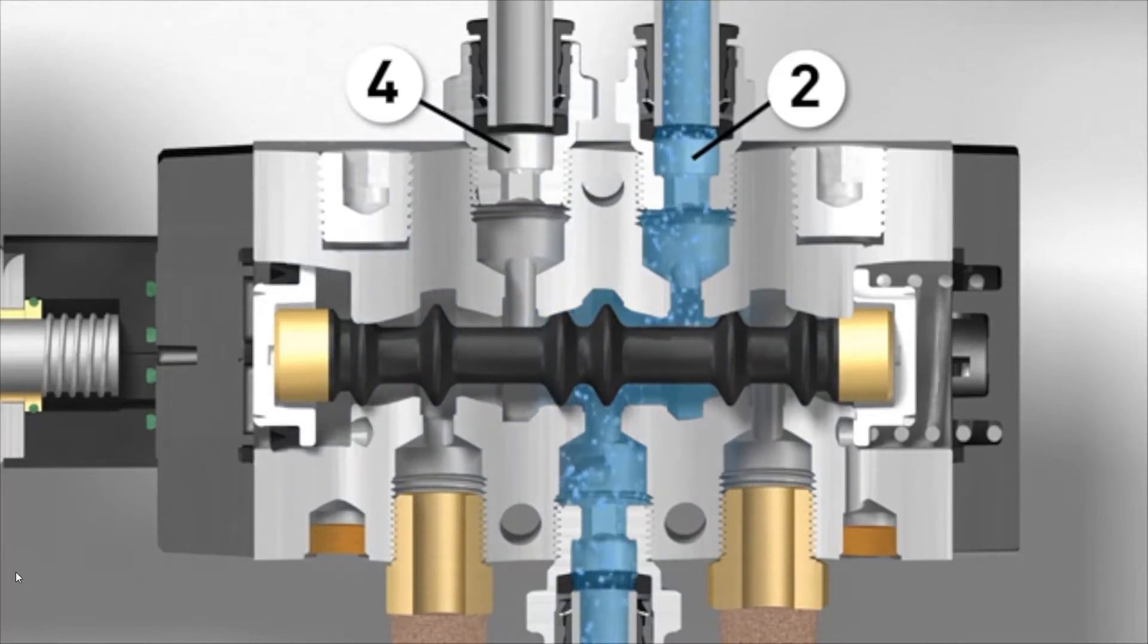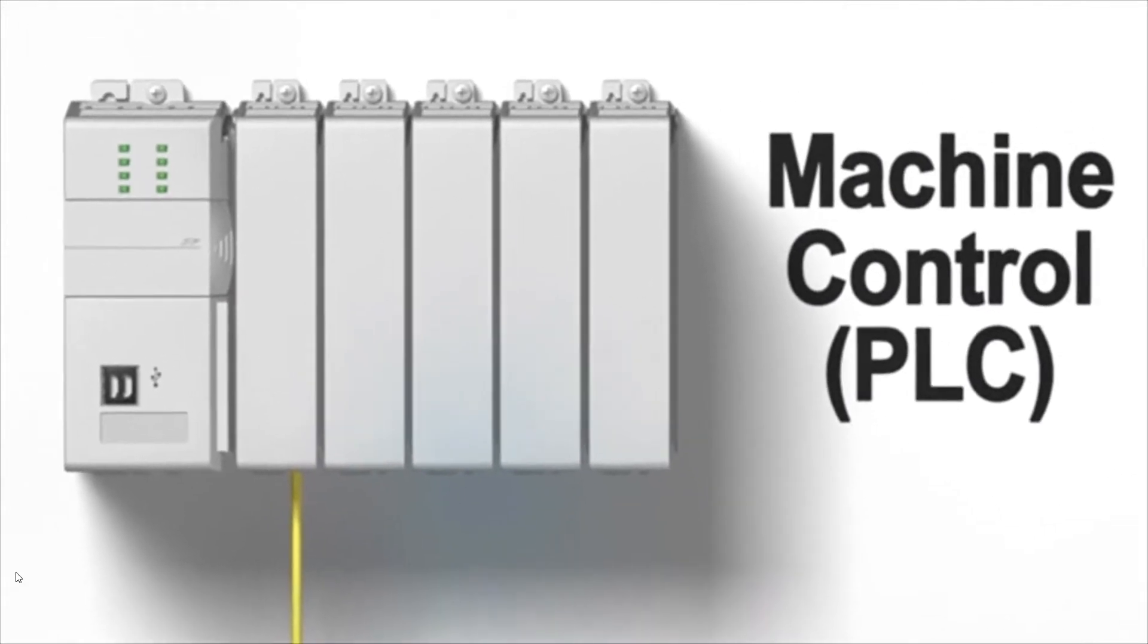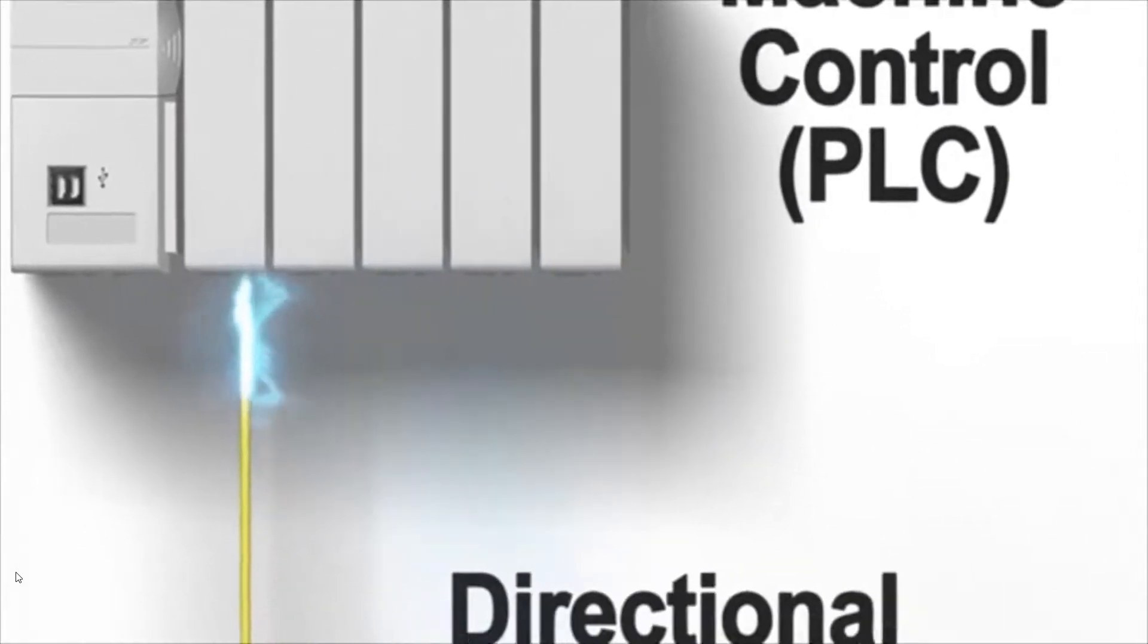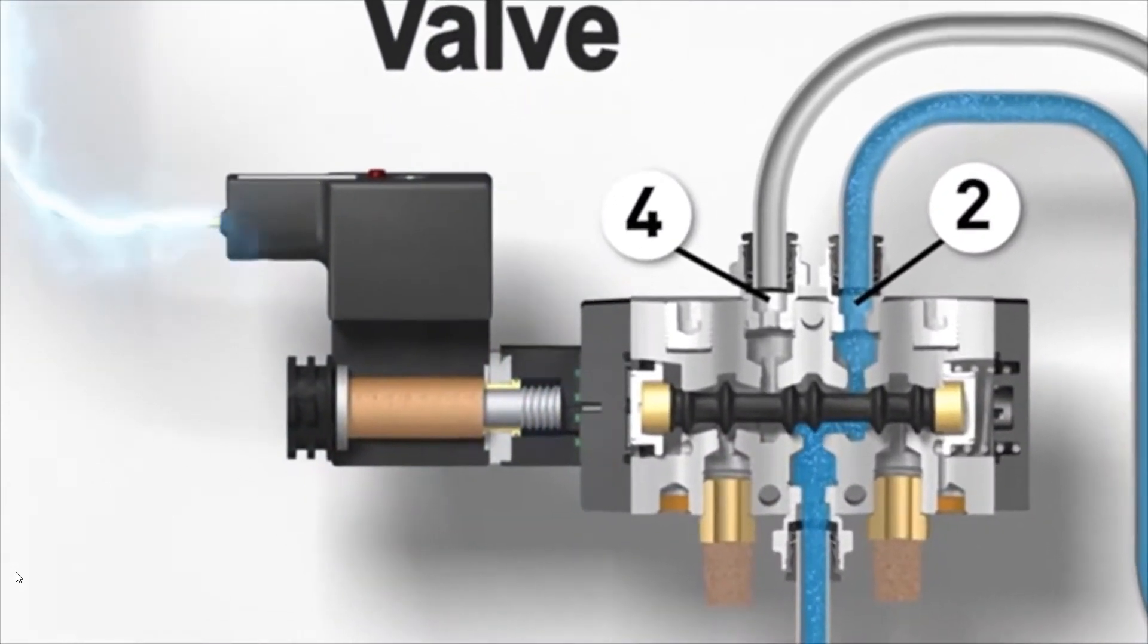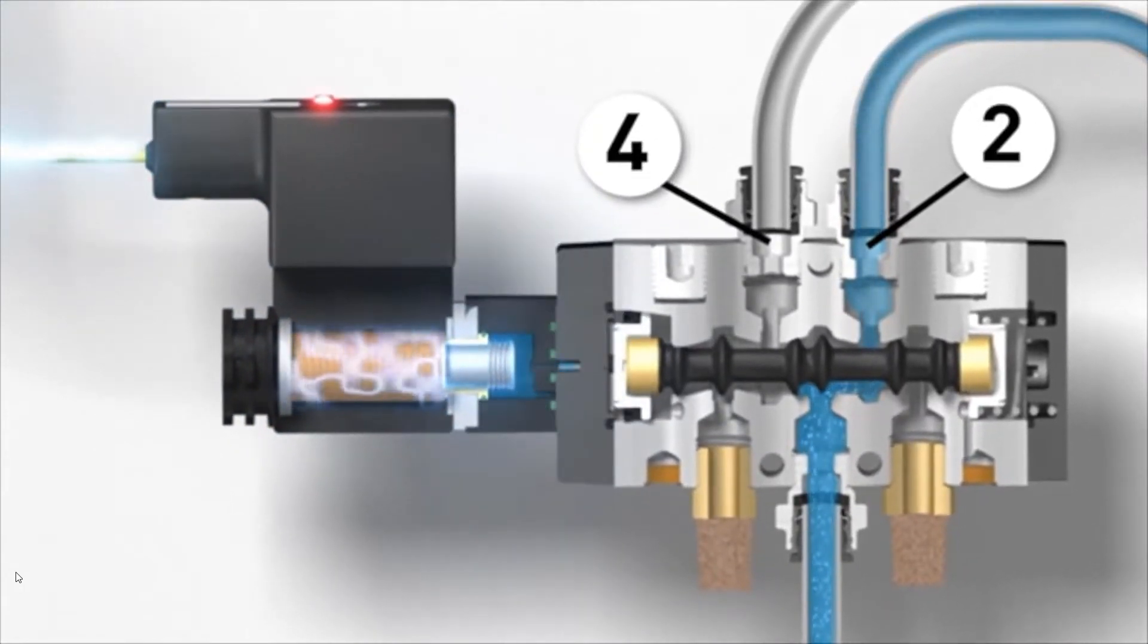In order to change the direction of the air to the number four working port, the valve needs to be turned on. In most automated equipment, a PLC, or Programmable Logic Controller, will instruct the valve to shift using an electrical signal. When the signal arrives at a portion of the valve called a solenoid coil, a magnetic field is created that pulls a plunger towards it.